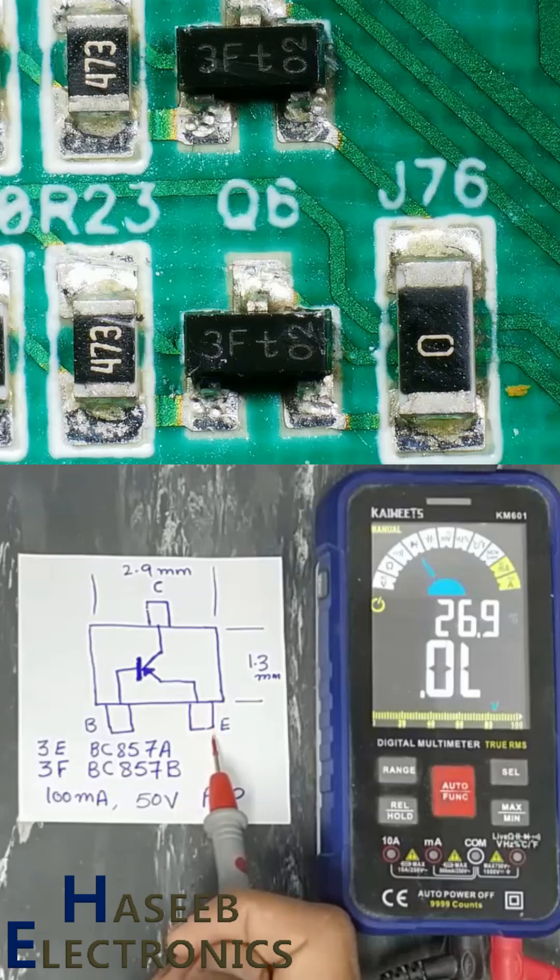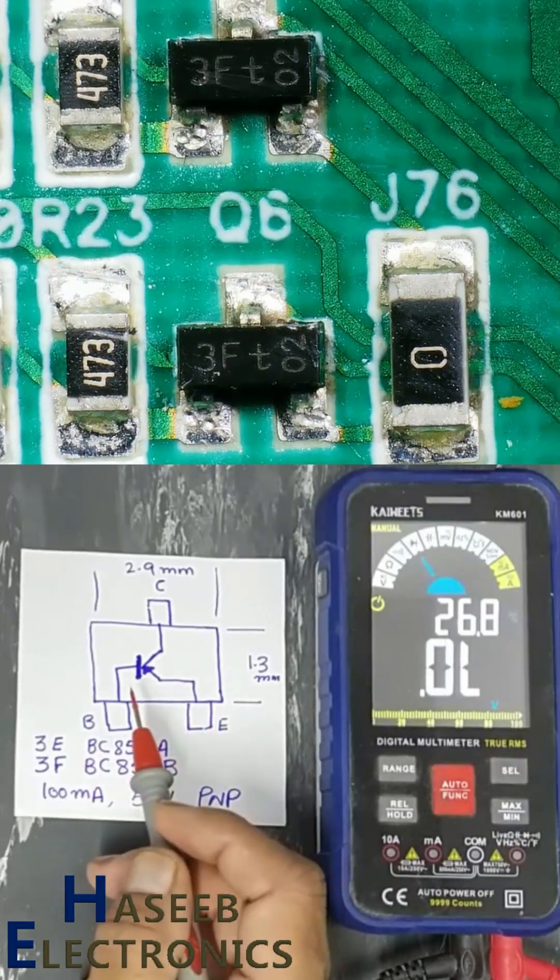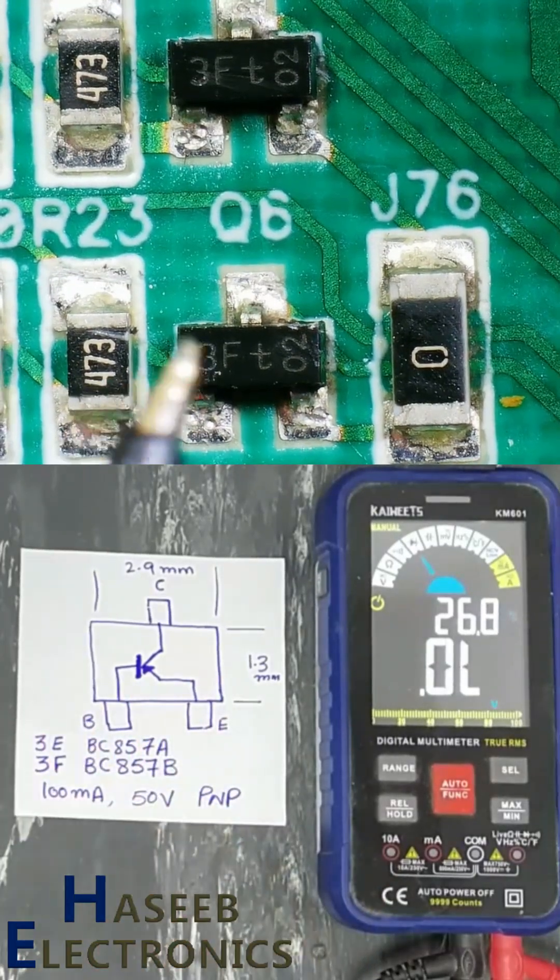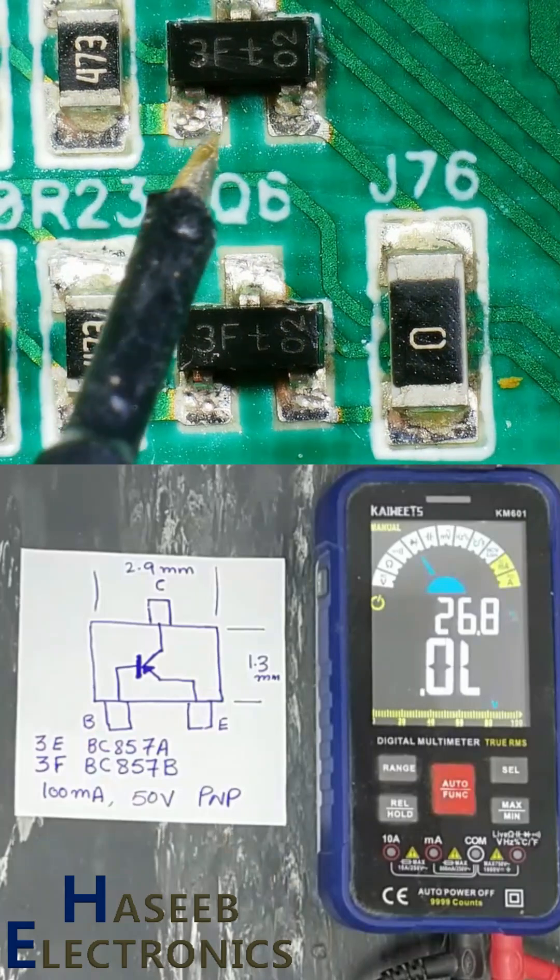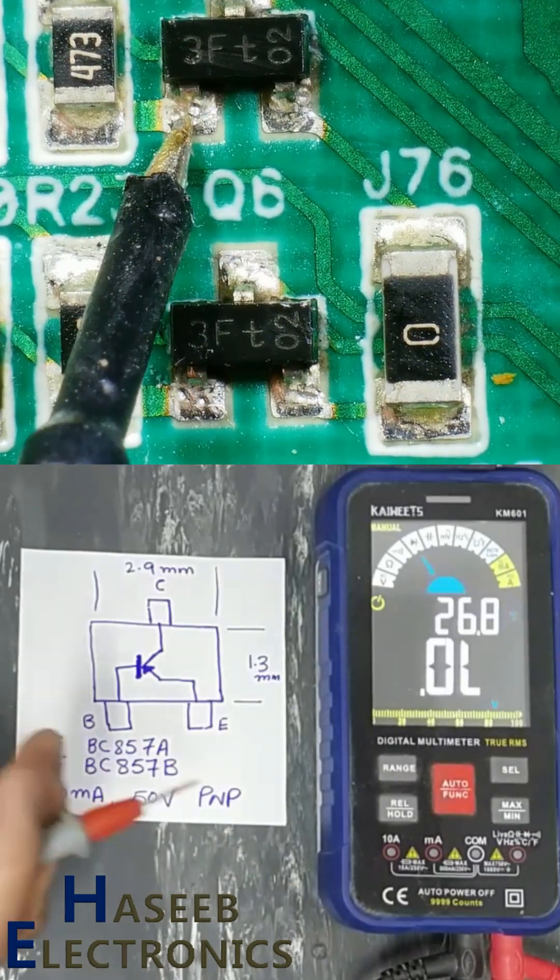We identified it is PNP transistor. That means base is negative. This is base. Set multimeter to diode mode.